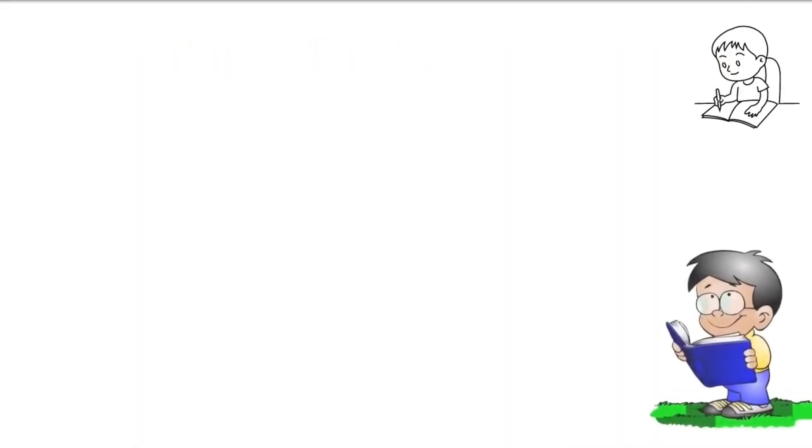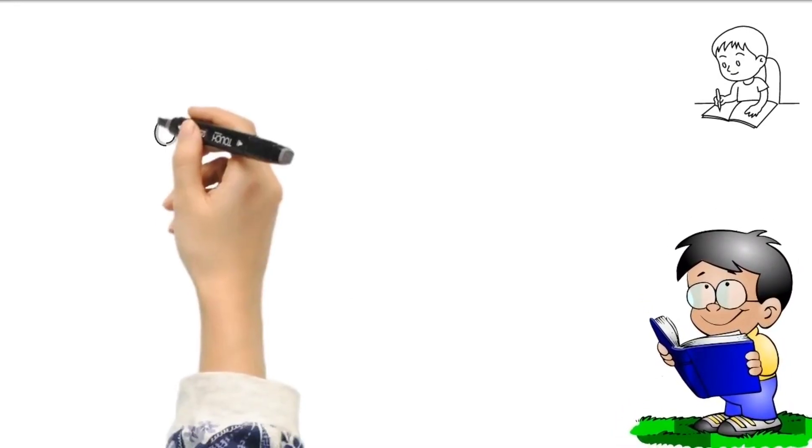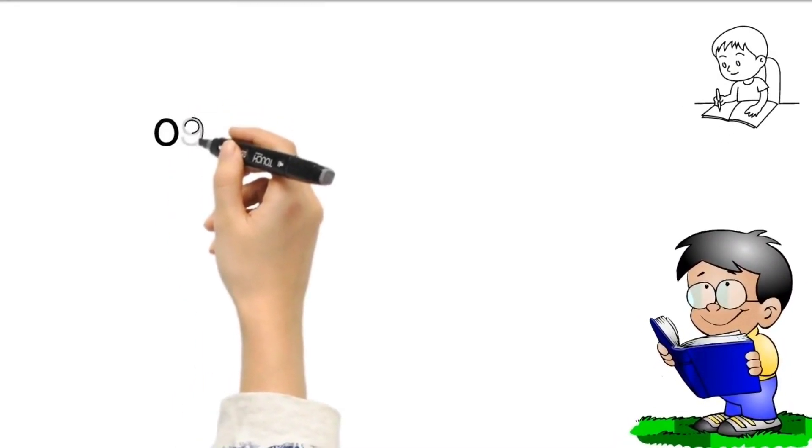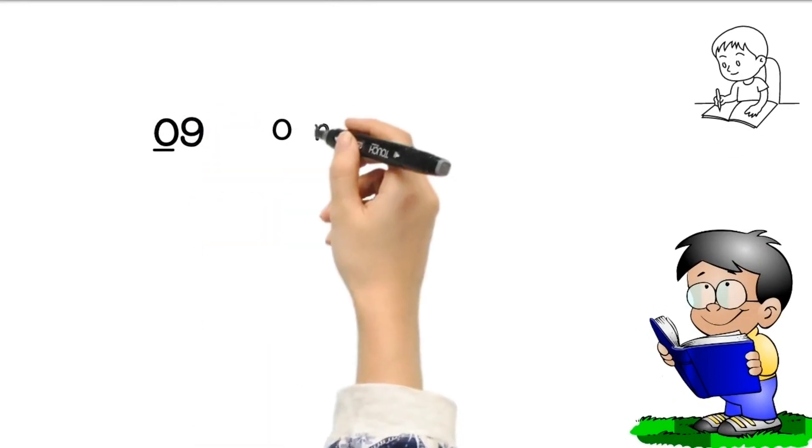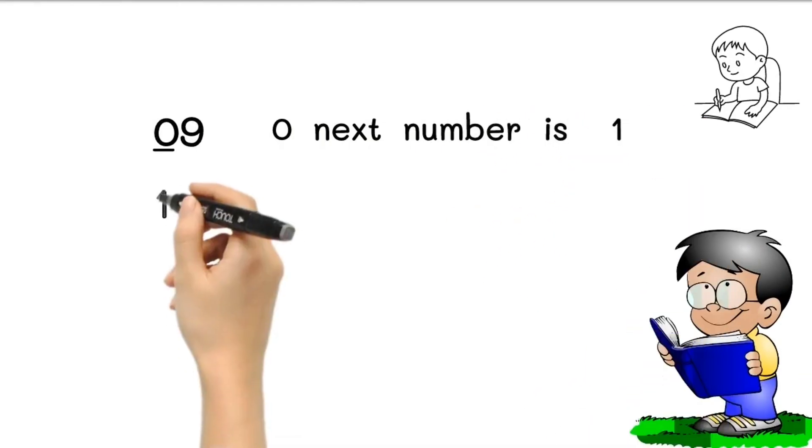According to the sutra, we have to take the next number of tens digit. Here first number is given 9. Tens digit is not there, that's why we will consider it 0. So if we take 0 as a tens digit, then the next number of 0 is 1.